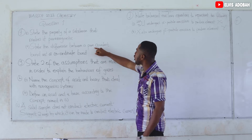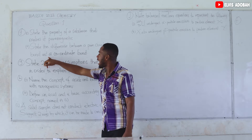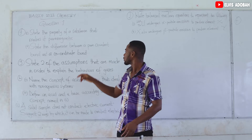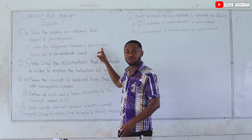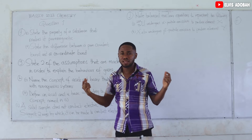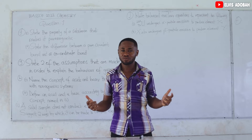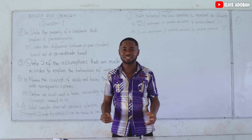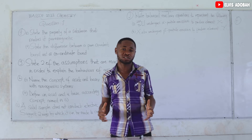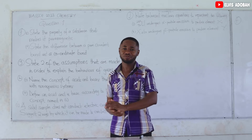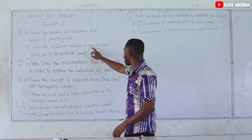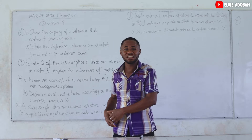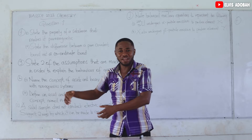State the difference between a pure covalent bond and a coordinate bond. In the formation of a pure covalent bond, the two atoms involved each donate one or more electrons so that they can share. So in a pure covalent bond, both atoms contribute — I will bring electrons, you will bring electrons, then we share.